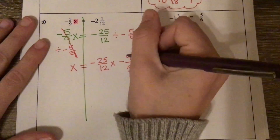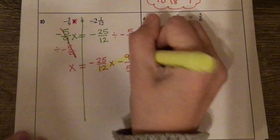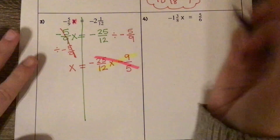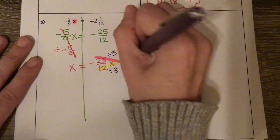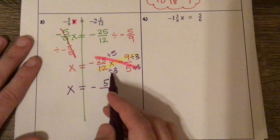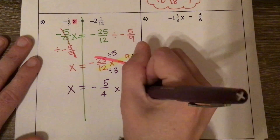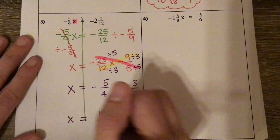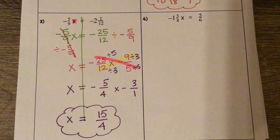Now I'm going to look to see if I can simplify by checking my two diagonals. I've got 12 and 9 in one diagonal, and 25 and 5 in the other — those both simplify. 25 and 5 divide by 5; 9 and 12 divide by 3. So we get: 25 divided by 5 is 5, 12 divided by 3 is 4, 9 divided by 3 is 3, 5 divided by 5 is 1. Multiplying across: 5 times 3 is 15, 4 times 1 is 4. A negative times a negative is a positive. You can leave your answer as an improper fraction or turn it into a mixed number.